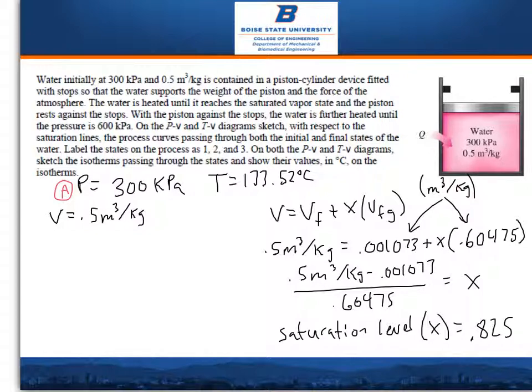To solve for the specific volume, you take VF plus X times VFG, where X is the quality of the water. So you have 0.5 meters cubed per kilogram equals 0.001073 meters cubed per kilogram plus X times 0.60475 meters per kilogram.